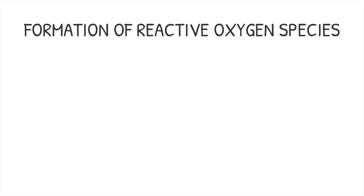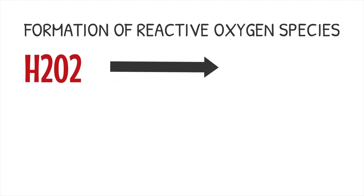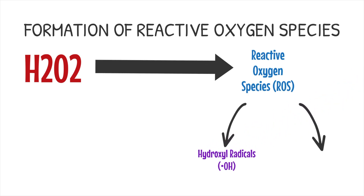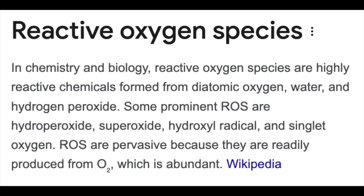Next, we have the formation of something called reactive oxygen species. The breakdown of hydrogen peroxide generates highly reactive oxygen species, abbreviated as ROS, which includes hydroxyl radicals and perhydroxyl anions. These radicals are very strong oxidizing agents — think of them as being very good at breaking chemical structures down, specifically stains.